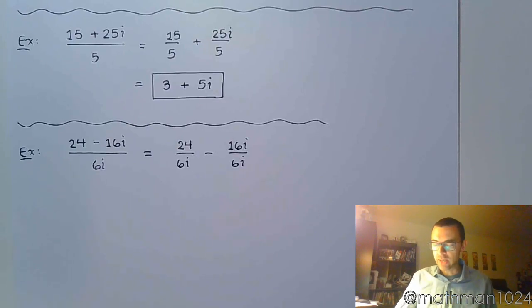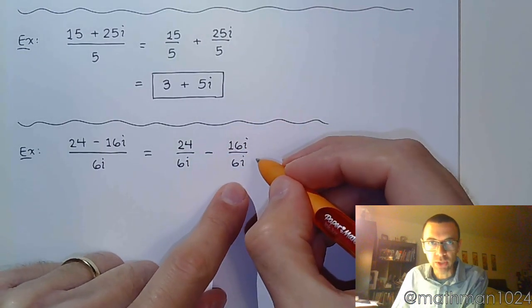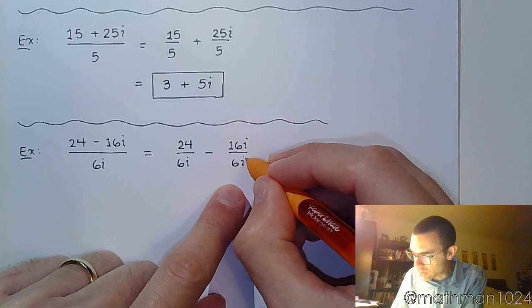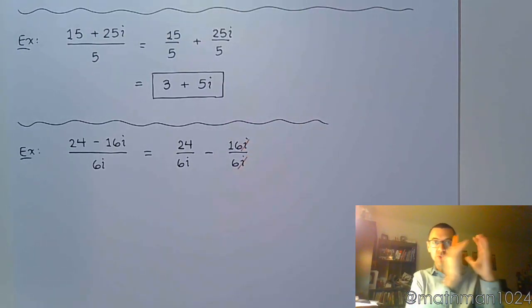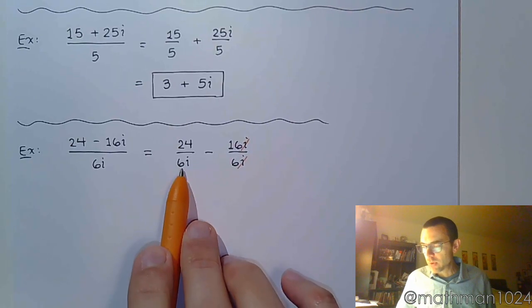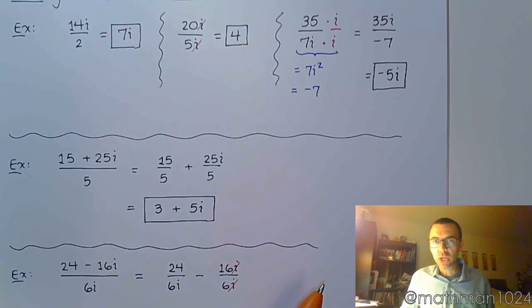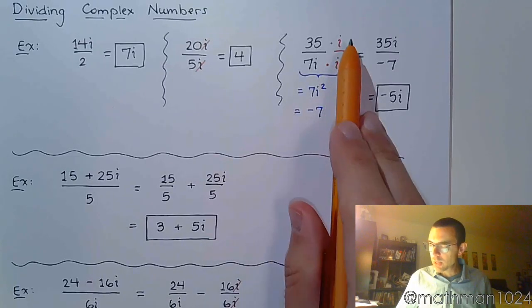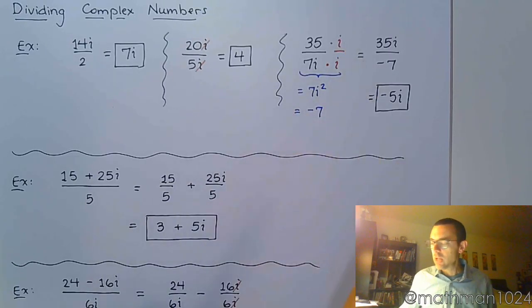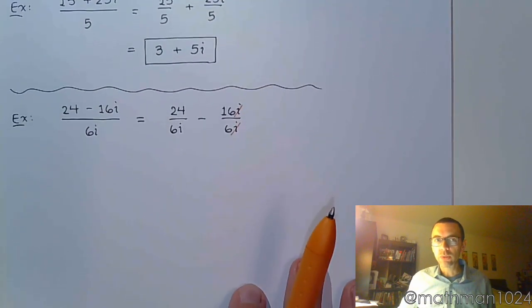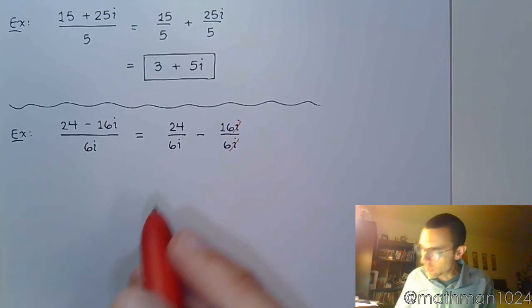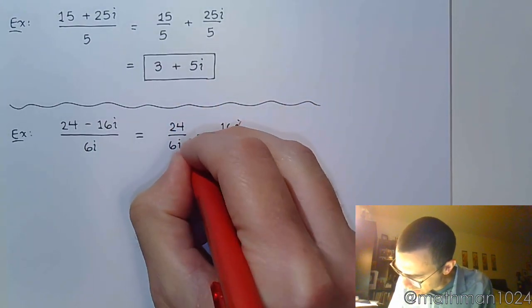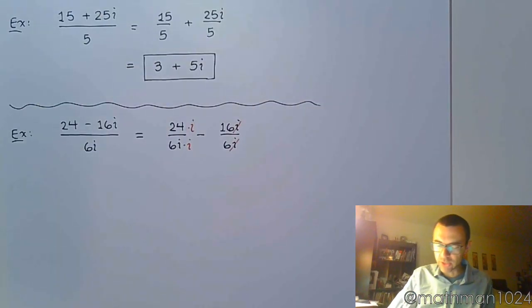So, 24 over 6i minus 16i over 6i. In this case, you've got two small fractions very similar to the first round that we did. The second one, my i's are instantly drawn to it because here I can reduce away those i's now that it's its own separate fraction. This one, though, is just like the one we did a moment ago where I needed to put in that missing factor of i so that I get a real number for the denominator. So, I'm going to do that here. I'm going to multiply both the numerator and the denominator times i.